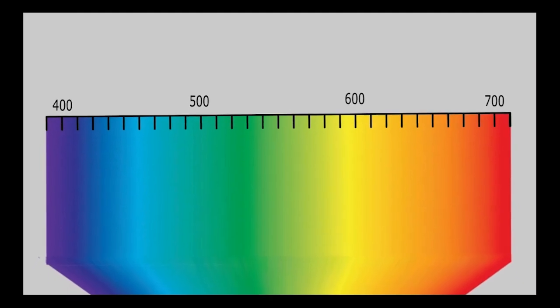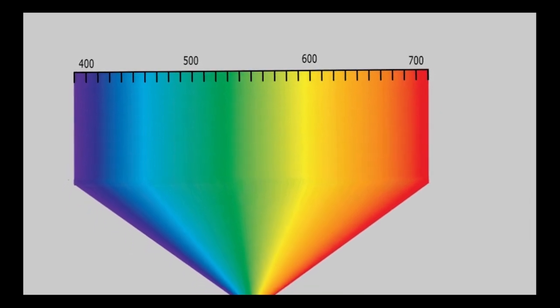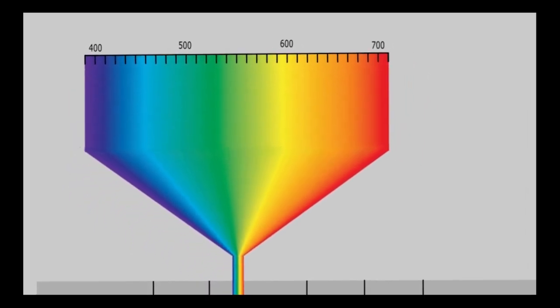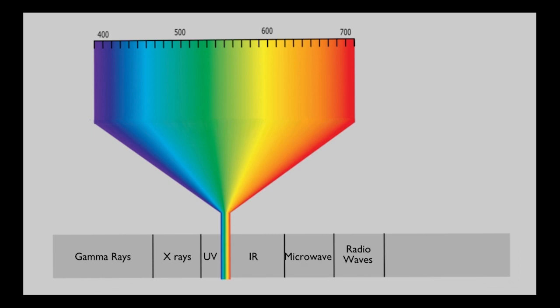The human eye can only see a small portion of the light spectrum, which is why we must use electronics to map the beam profile. On this chart, you can see the visible spectrum only spans approximately 300 nanometers.